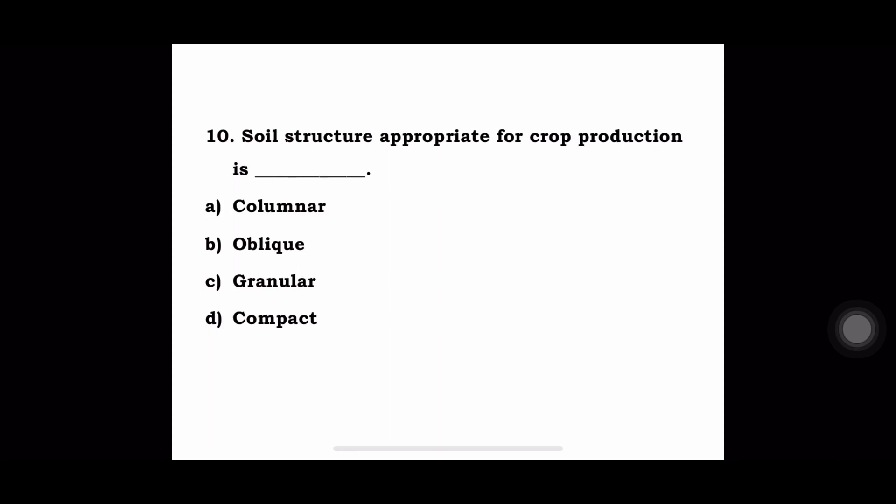Next question: soil structure appropriate for crop production is? a) Columnar, b) Oblique, c) Granular, d) Compact. The answer is granular.